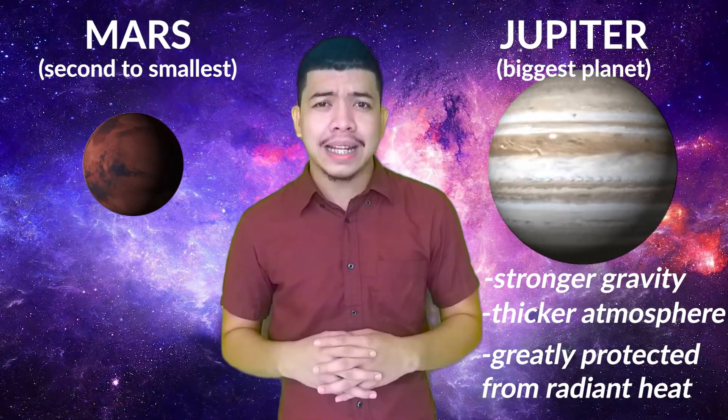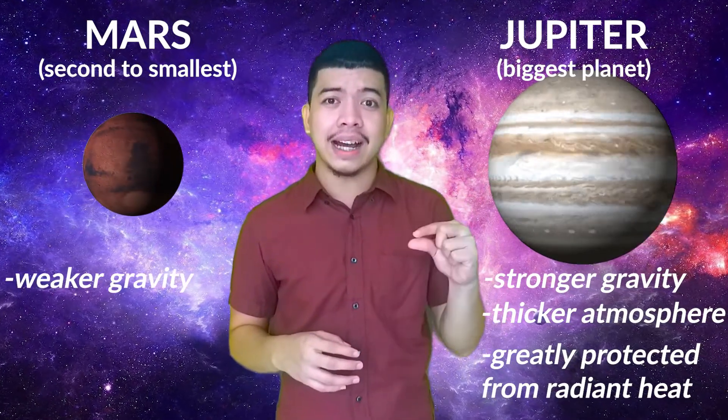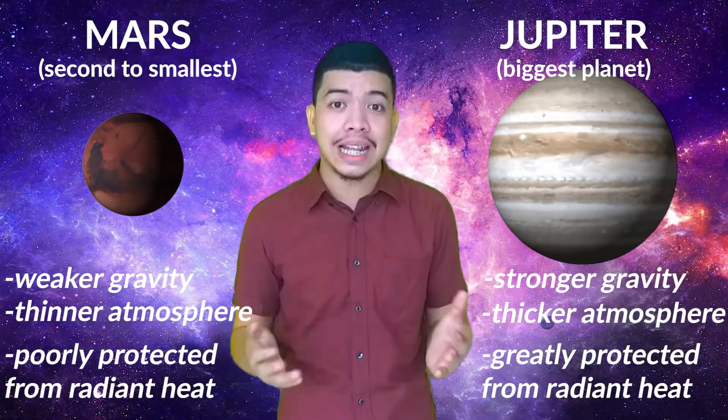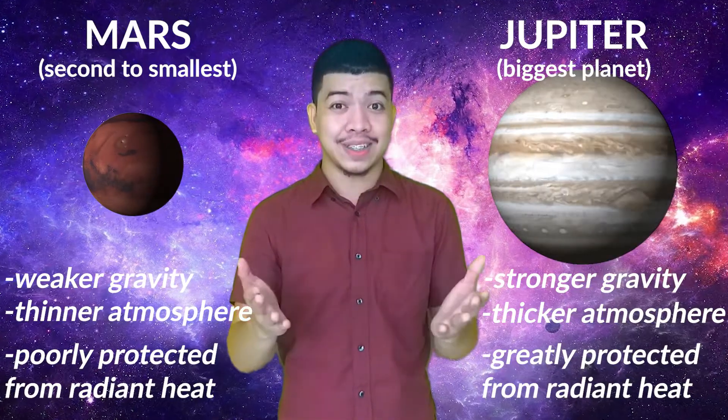Conversely, yung mga planets naman na smaller ang size, mahina ang kanilang gravity at dahil dun, little lang ang kanilang atmosphere at little lang ang kanilang protection mula sa init ng araw.